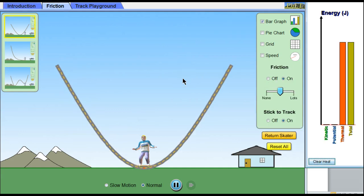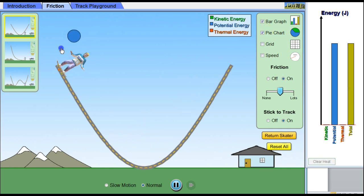Now, something else we want to look at is the effect of friction. So I will put the bar chart up there and we'll move him up here. Right now, friction is on and it's in the middle. So if I let him go,